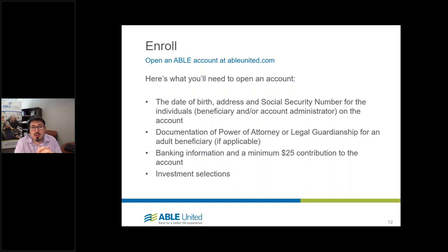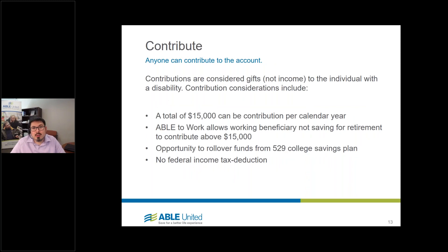We have a power of attorney form on our website specific to the ABLE United program. We see a lot of parents of newly adult children in this type of situation, so we provide a free power of attorney form. During the process, you'll also upload your banking information or connect your checking or savings account directly to the ABLE program, select your investment options, and contribute a minimum of $25. The whole enrollment process takes 20 to 30 minutes.